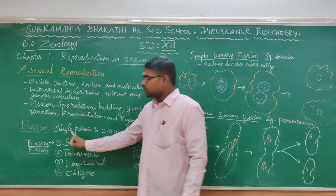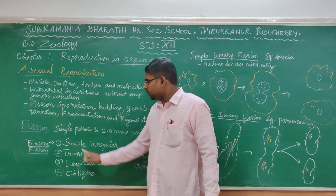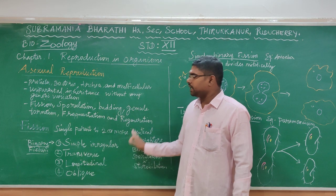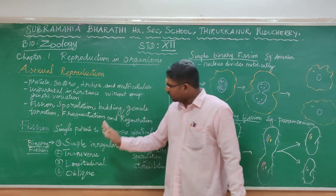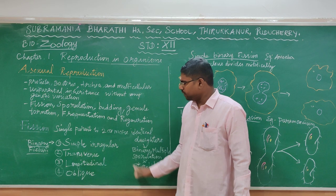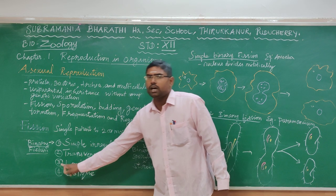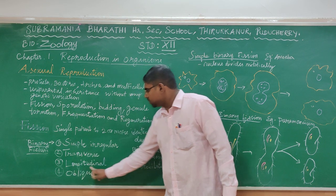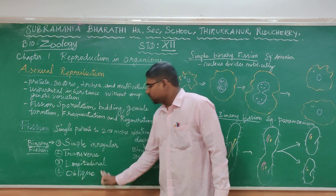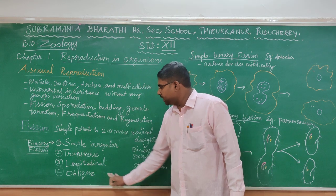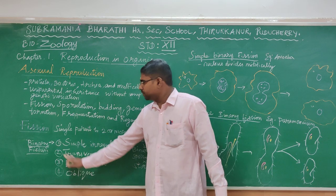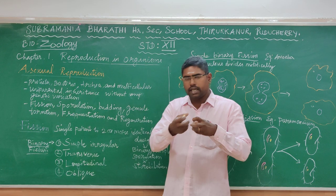There are four types of Binary Fission. One is Simple Irregular Binary Fission. Two is Transverse Binary Fission. Three is Longitudinal Binary Fission. Four is Oblique Binary Fission.